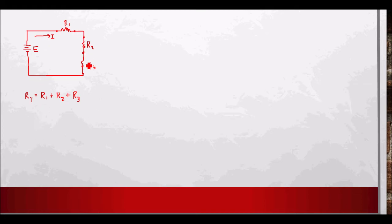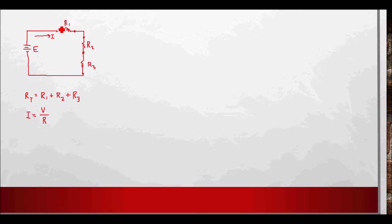We can also apply Ohm's Law. By definition, current is equal to the voltage applied to the circuit over the total resistance or equivalent resistance. Since we have three resistors, the total resistance RT is the sum of R1, R2, and R3. So I equals E over RT — that is how we solve for our current I.